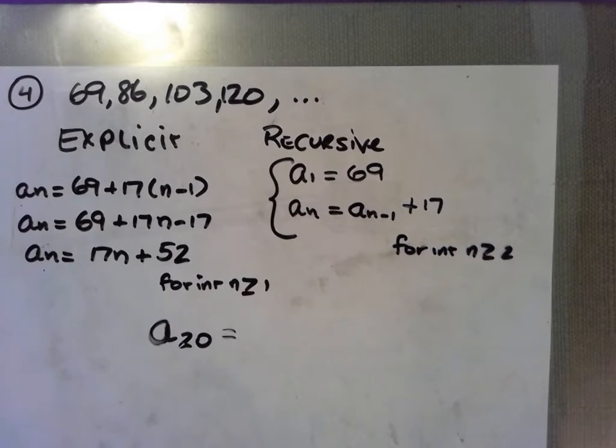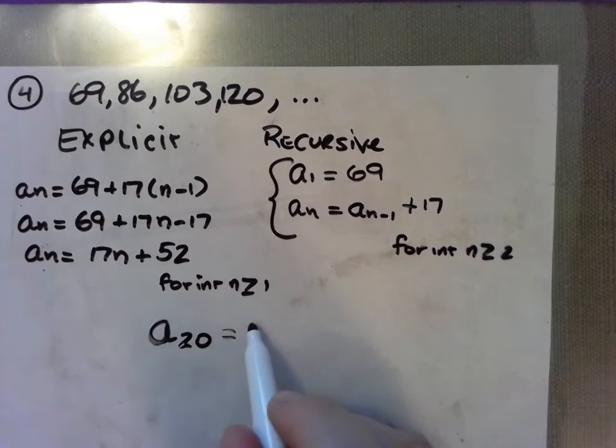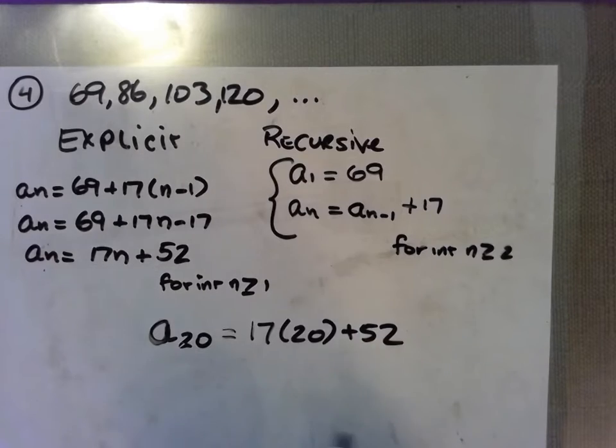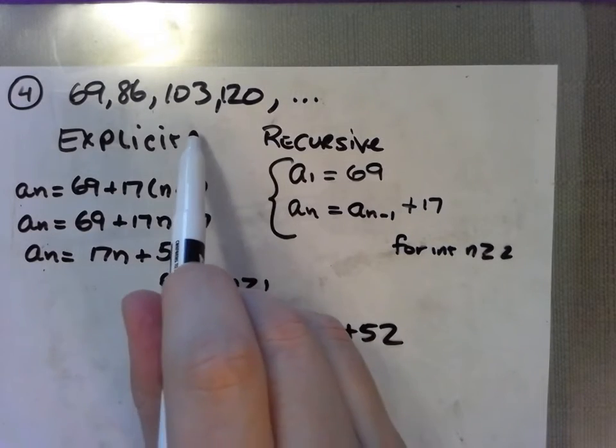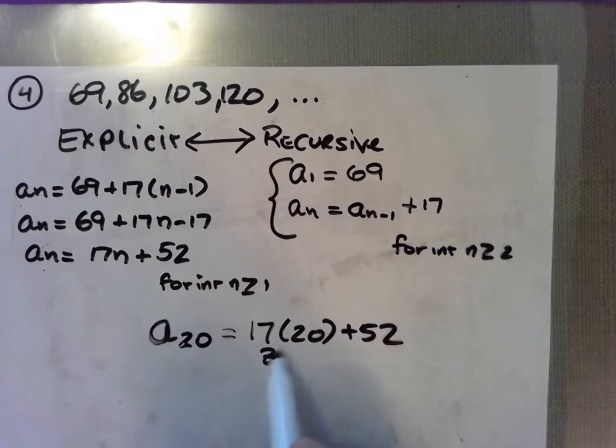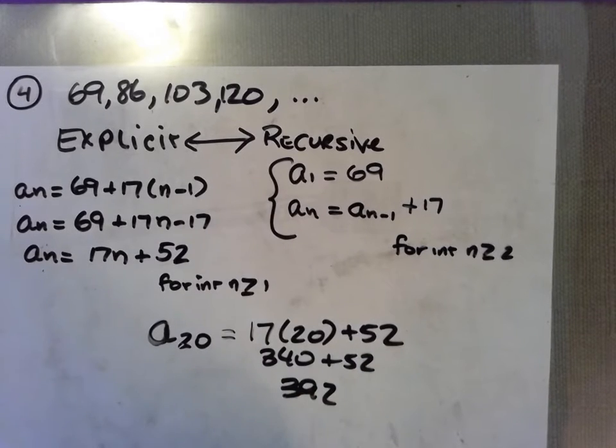So in order to find the 20th term, we should probably use the explicit formula. It's probably a good idea to be able to write an explicit formula from a recursive formula and vice versa. You would just do 340 plus 52, that's 392, and that's the value of your 20th term.